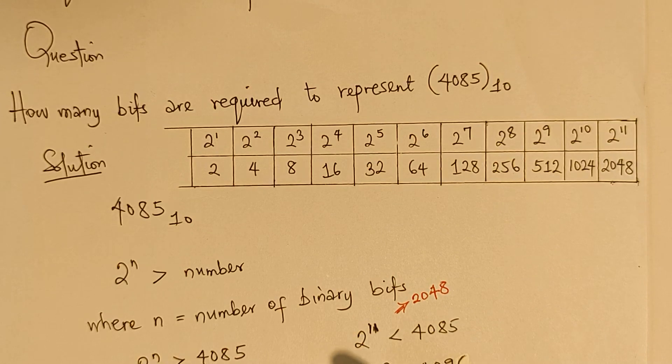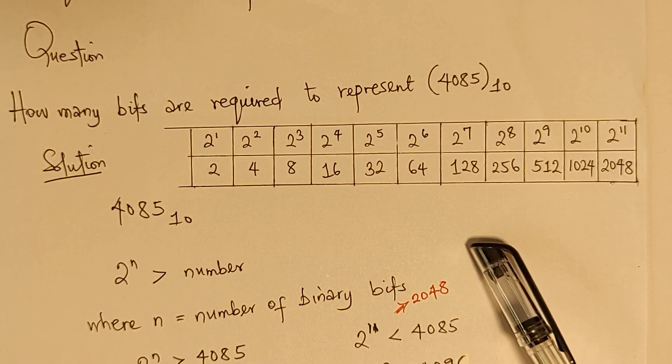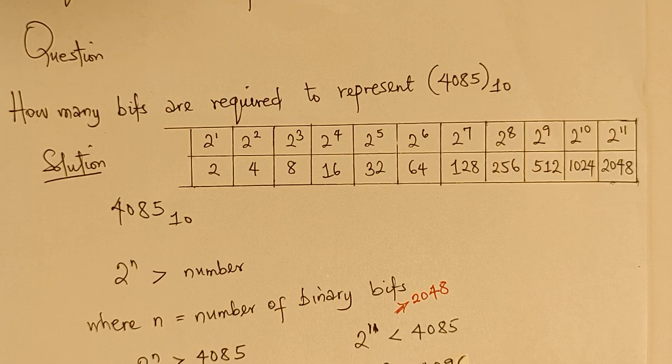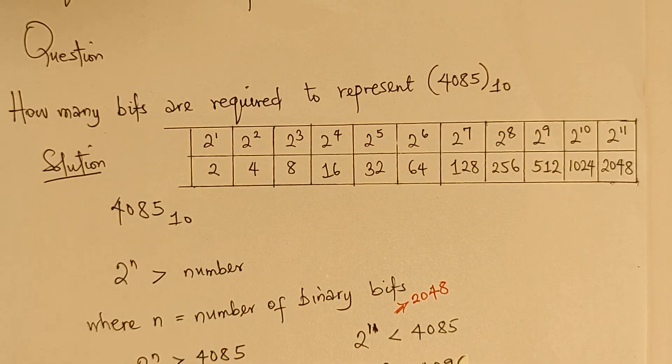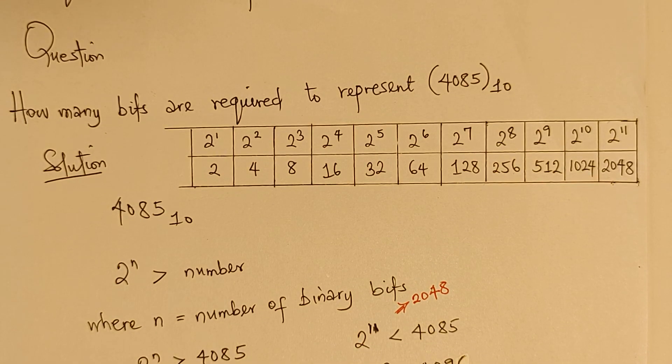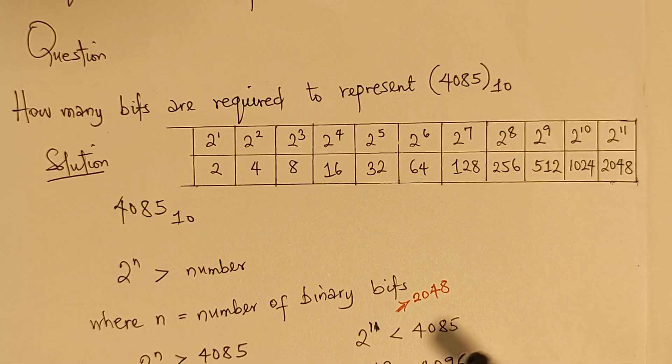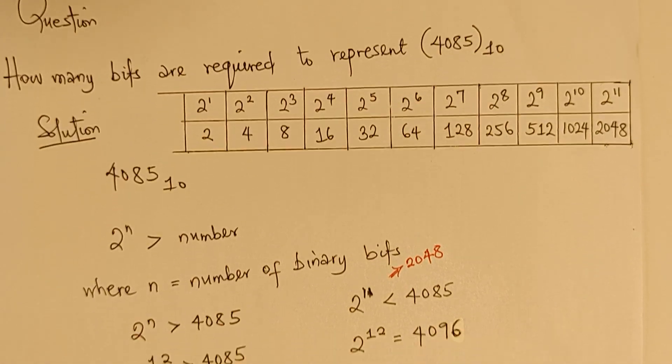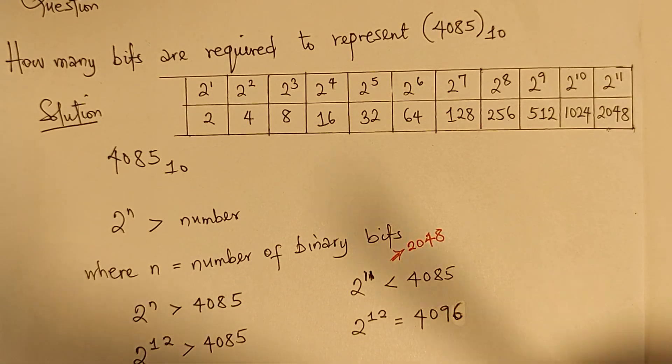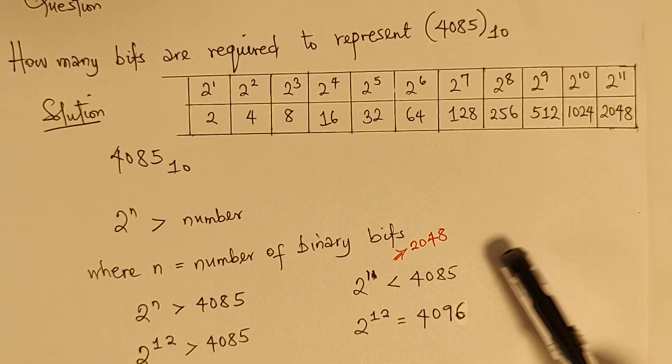Now, if we consider 2 raised power 11, it would be less than 4085. What do I mean? 2 raised power 11 is literally 2048. So, 2048 is less than 4085. So, we can't go with that. Rather, we will look at 2 raised power 12, which is 4096. And 4096 is greater than 4085.